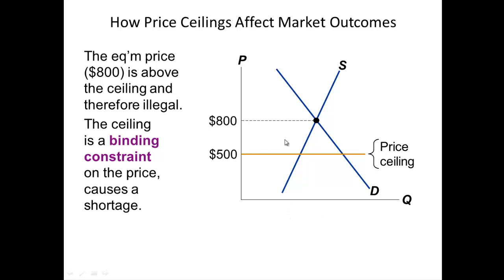For example, when the government sets the price ceiling at $500, suppliers only want to sell a smaller amount, but buyers want to buy more. What you end up having is a shortage. At $500, suppliers only want to supply 250 units, but buyers want 400. So 400 minus 250 means you have a shortage — more demand than supply.